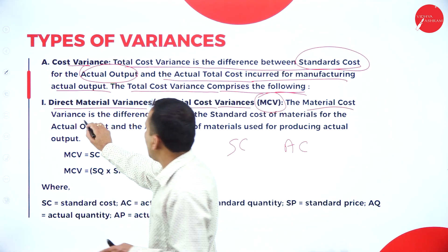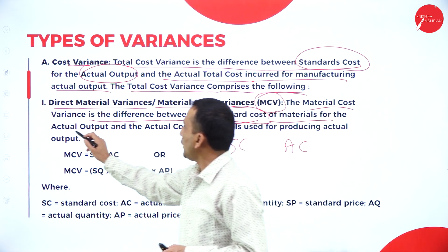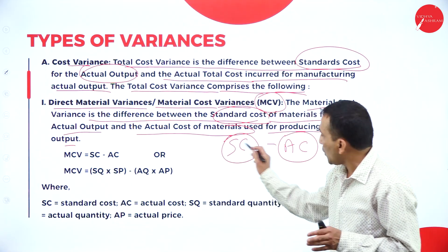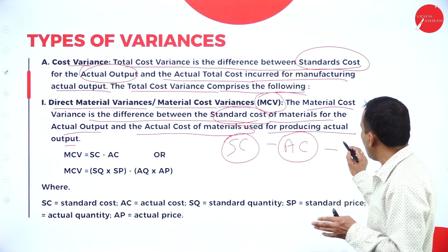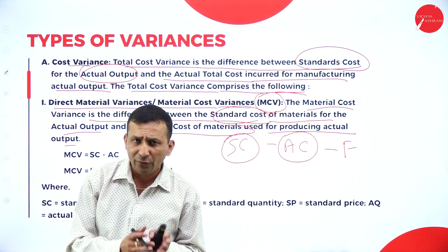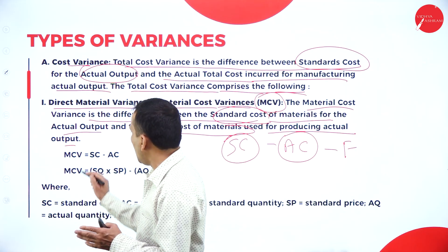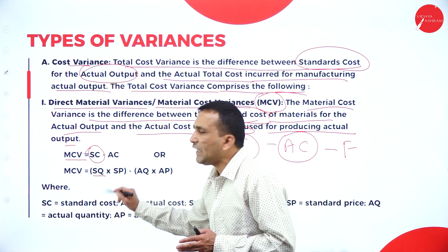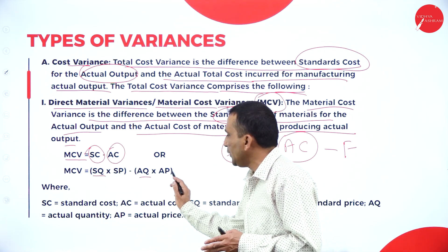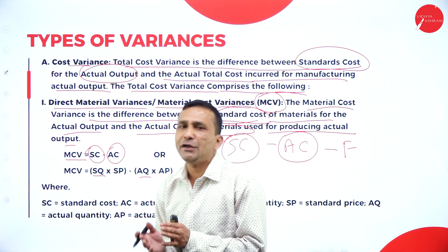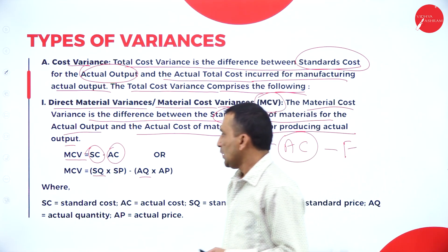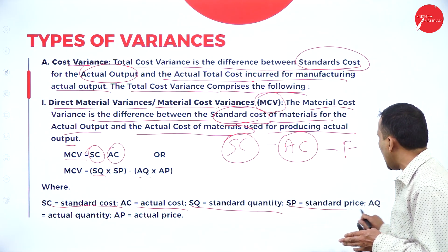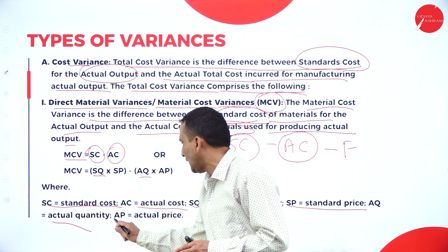The Material Cost Variance is a difference between the standard cost of material for actual output and the actual cost of material used for actual output. When standard cost minus actual cost gives a positive result, it is a favorable variance. The formula: Standard Cost (SC) = Standard Quantity (SQ) × Standard Price (SP); Actual Cost (AC) = Actual Quantity (AQ) × Actual Price (AP).